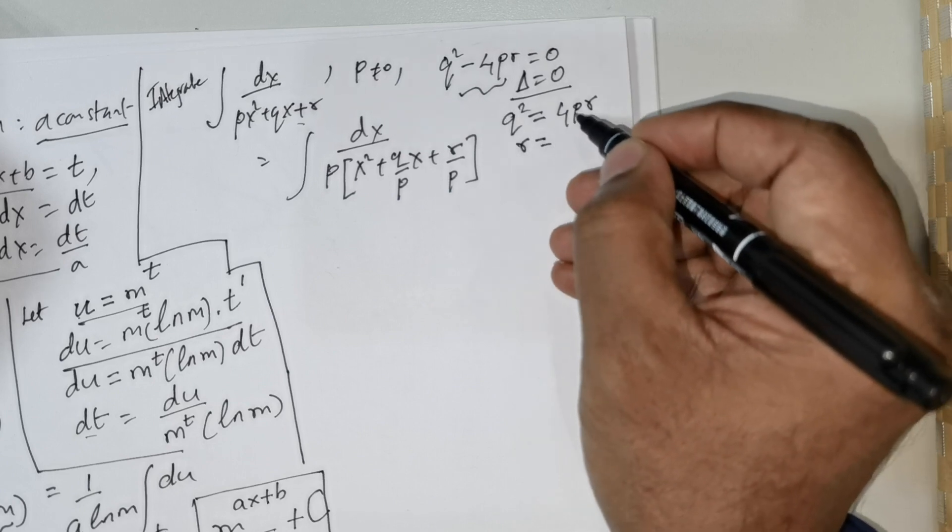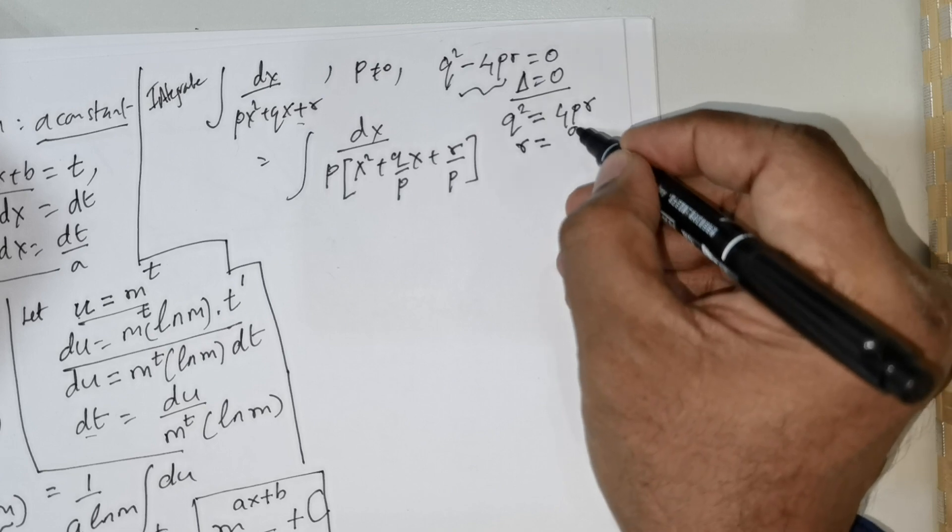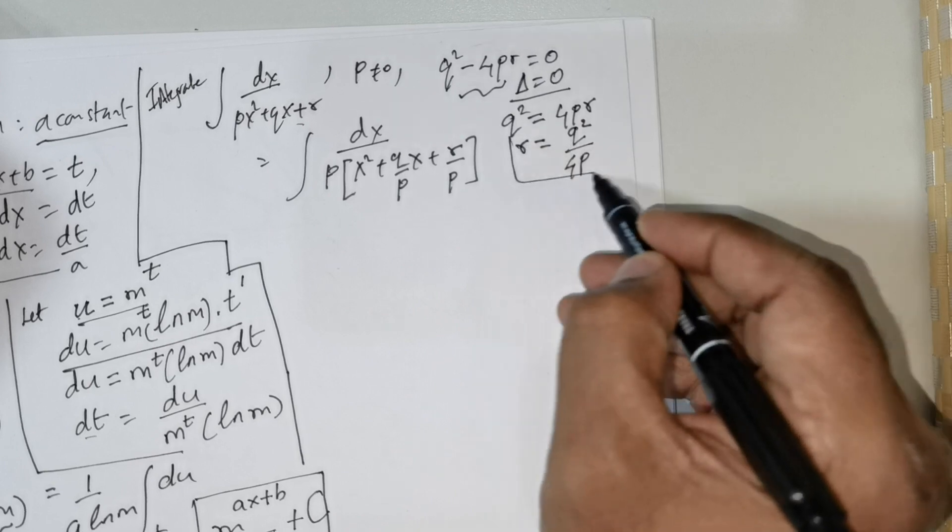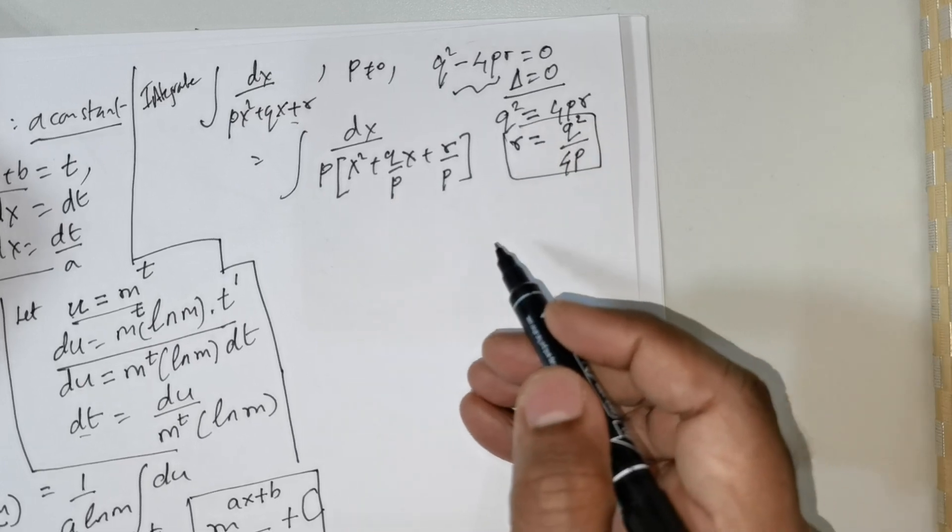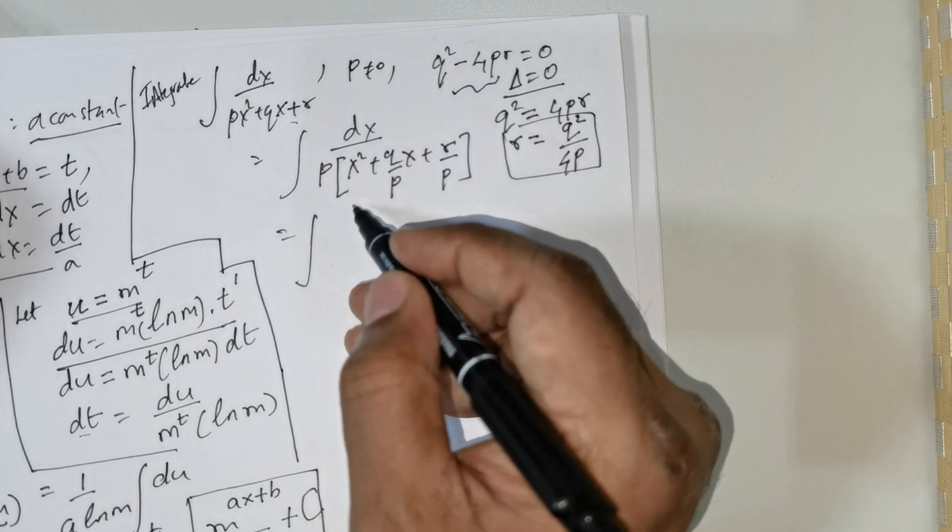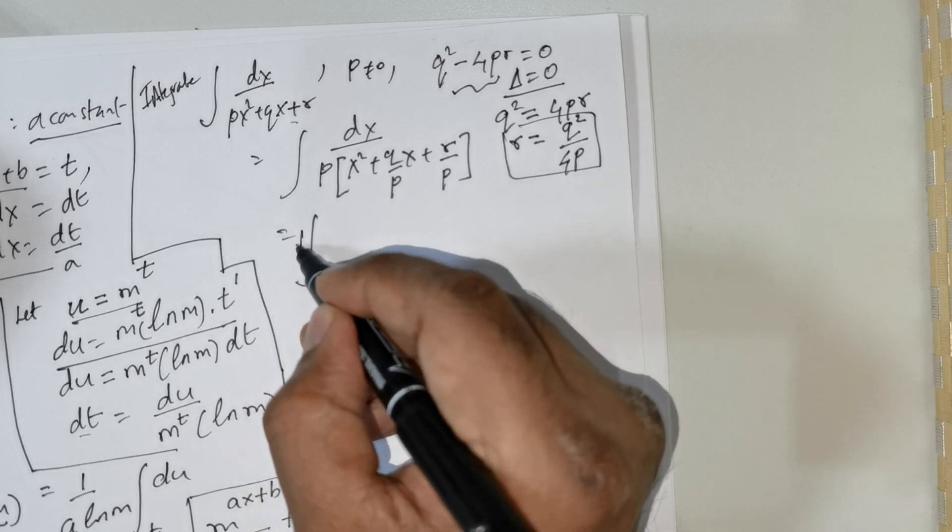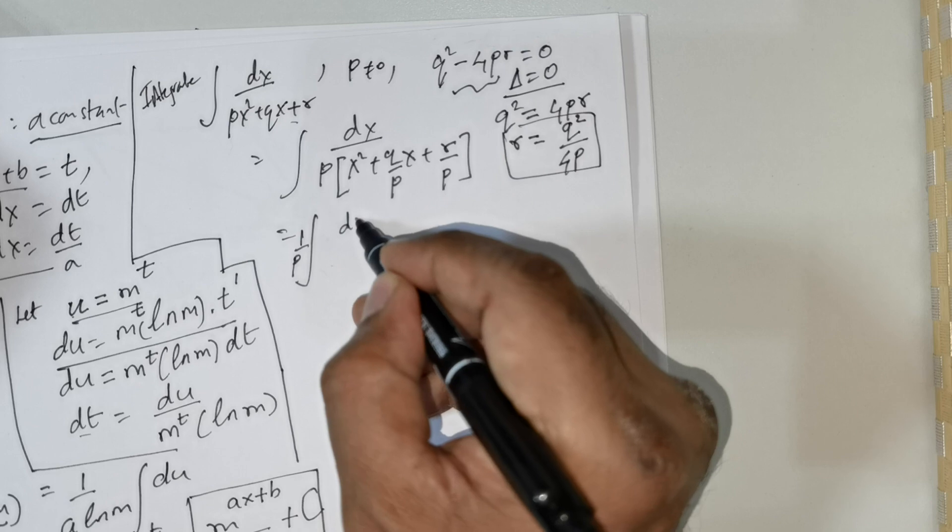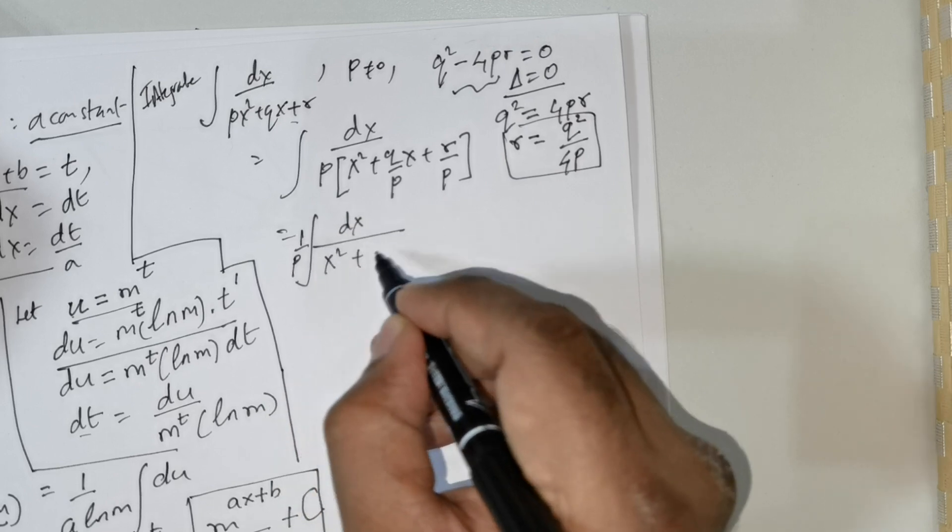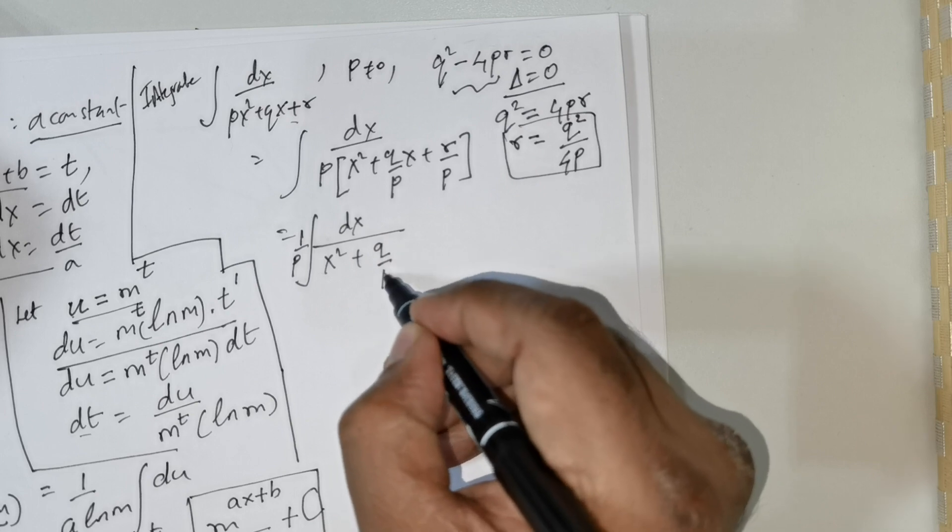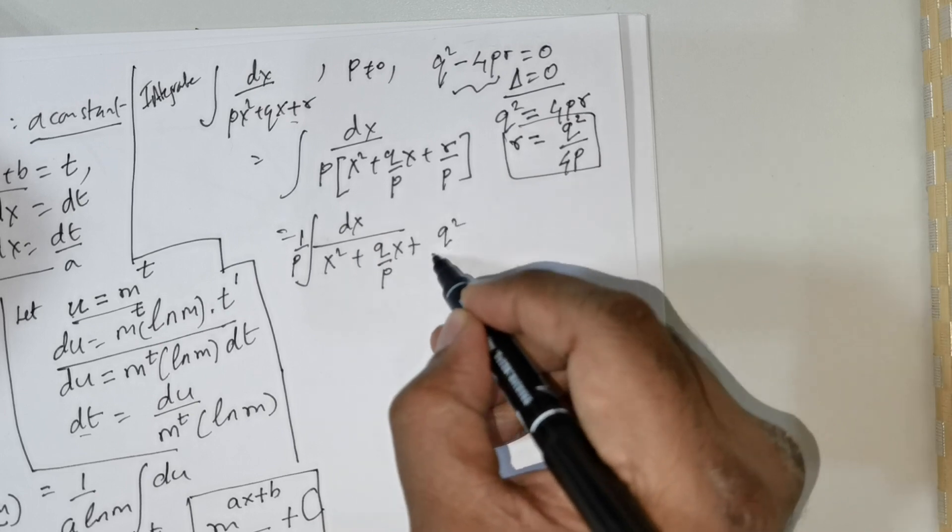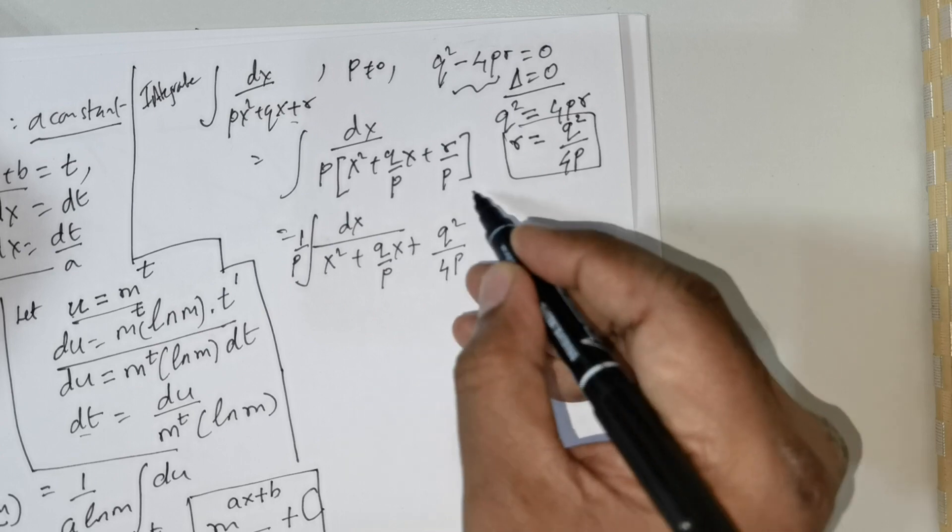In other words, I will try to have r on the left side with everything brought to the right side. So r is going to be equal to q squared over 4 times p. Take the value of r and substitute it. This equals integral, now I've got this p, I can take the p out and rewrite this as integral dx over x squared plus q over p times x plus q squared over 4 times p.